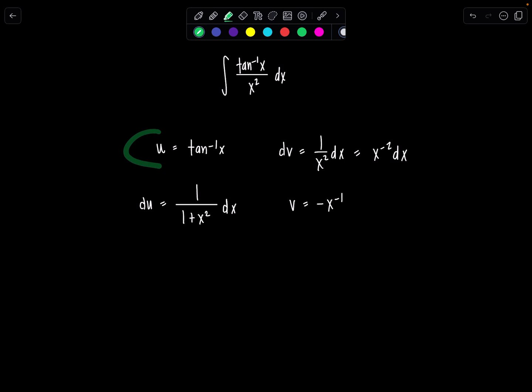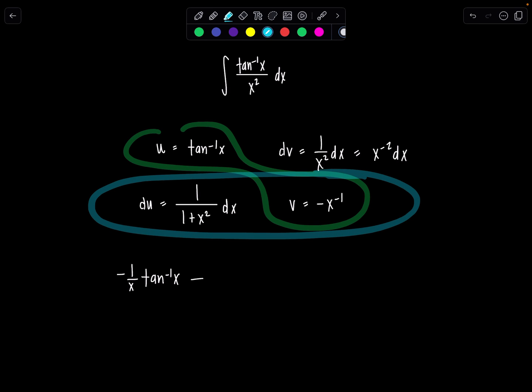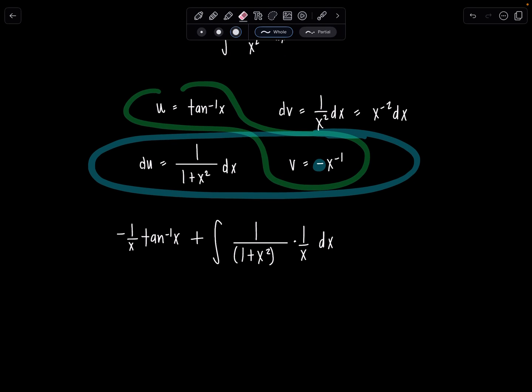Very nice. So now we can rewrite everything as u times v. I'm going to put negative 1 over x in the front and then tan inverse of x. So there's no confusion as to what the argument is. If you have like an extra term being multiplied, always put it in the front. u times v minus and then we have v du, this product right here. And since there's another negative in that product, I'm going to switch this to a plus integral. 1 over 1 plus x squared dx times x to the negative first. That's the same as times 1 over x. Now how to deal with this new integral.